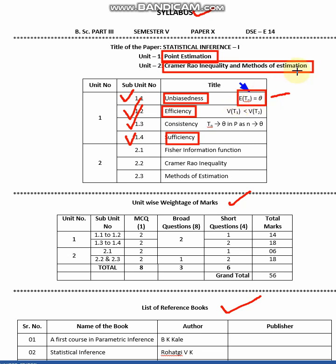As per the property of unbiasedness, we can say that the expectation of T_n is the same as the parameter theta. That is one property. The next property is efficiency.